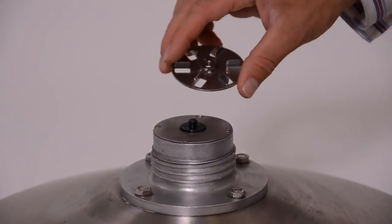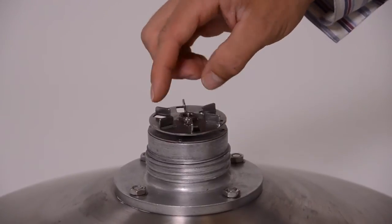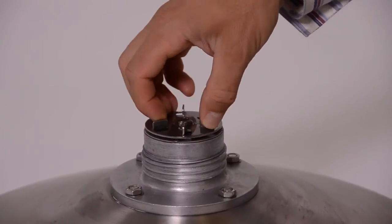The last step is to install the metal driver by hand. Since it is reverse threaded, the driver will tighten as the motor turns the auger.